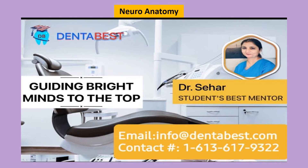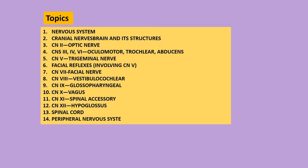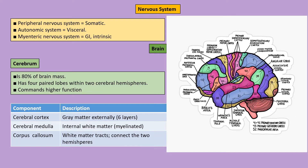Hello everyone, this is Sahar again. Today we are going to do the neuroanatomy, histology, and developmental biology review in this video. We can see different topics here, starting with the nervous system where we discuss cranial nerves, veins, and its structure, then different types of cranial nerves with the spinal cord, peripheral nervous system, then oral histology, and finally developmental biology.